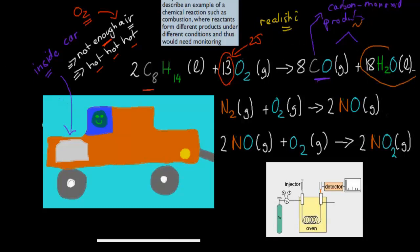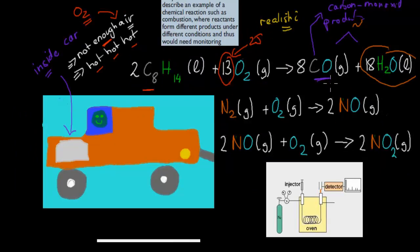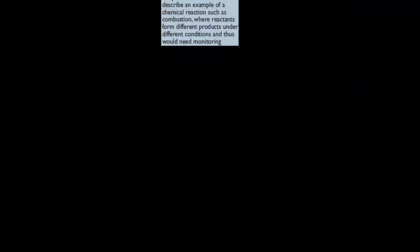Water itself is the same. So in this case, we've got 16 moles of carbon dioxide in one equation, whereas here we have 8 moles of carbon monoxide. The learning objective says: describe an example of a chemical reaction such as combustion, where reactants form different products under different conditions. We've got octane and oxygen in both examples, but in one example we have more oxygen and we form carbon dioxide, whereas in the other example we have less oxygen and we form carbon monoxide. So these are different products even though we have the same reactants — that's what that part means.